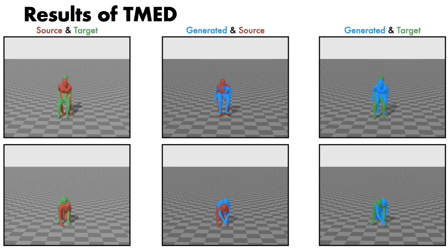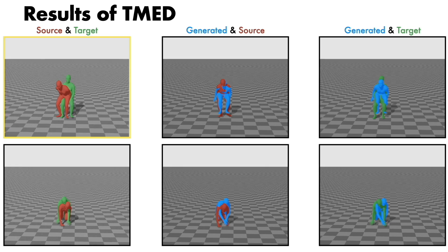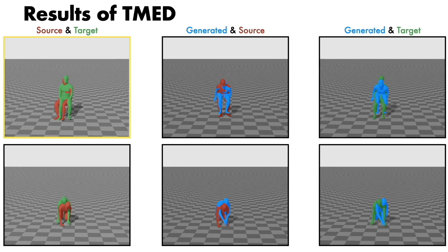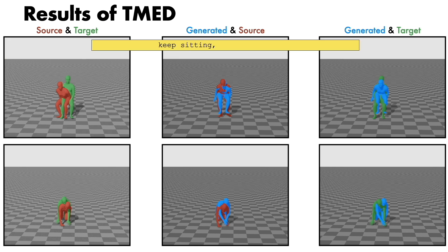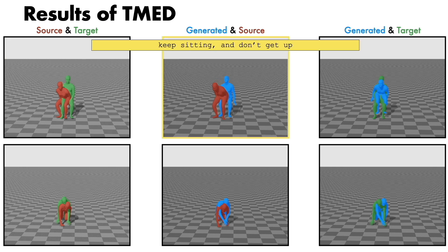Next, we show examples of our method TMED. We show the generated motions in blue. In the first example, given the source motion and the edit text keep sitting and don't get up, TMED faithfully generated the edited motion.